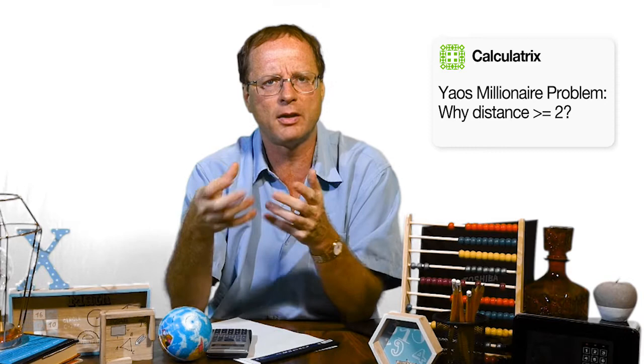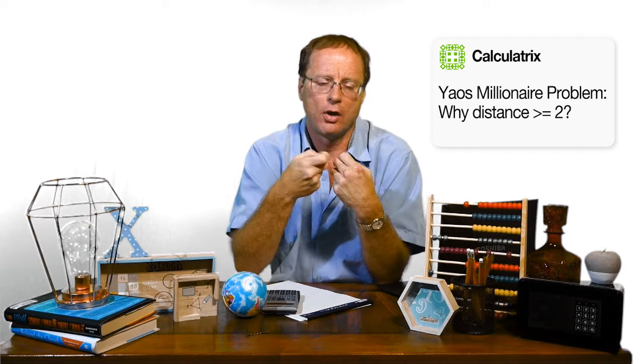They don't want to reveal to each other how much money they've got. So what Yao's Millionaire's problem does is it works out which of the two millionaires is the richest without actually revealing the amount of money they've got — it just reveals who's the richest.